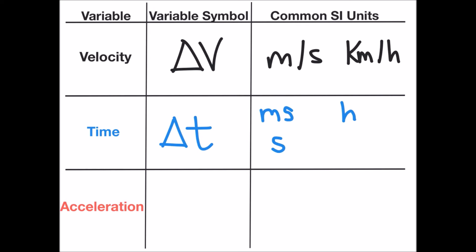The last variable is acceleration, which we define as the rate of change in speed or velocity of an object. The symbol for acceleration is a lowercase a, and the most common units used are meters per second squared or kilometers per hour squared.